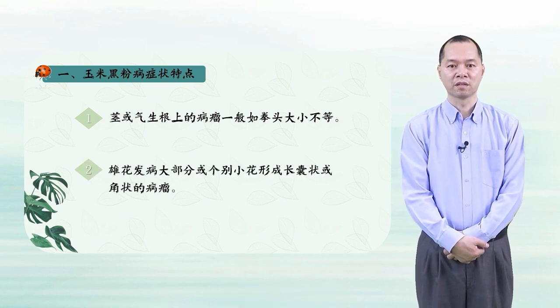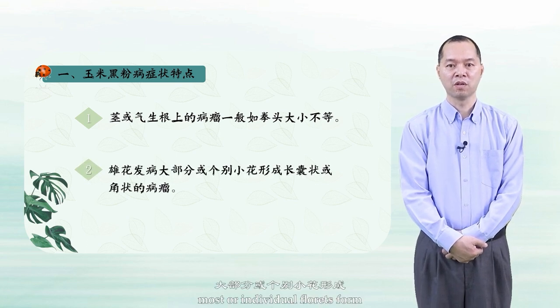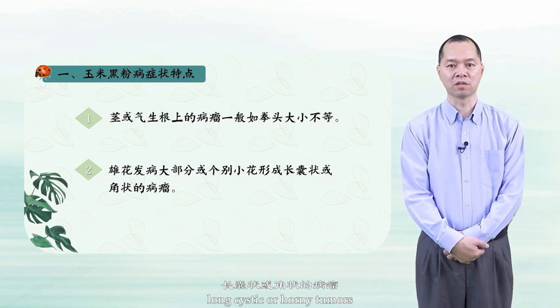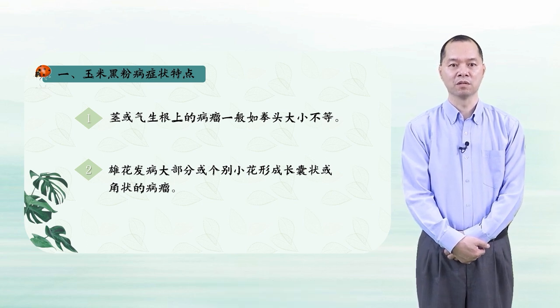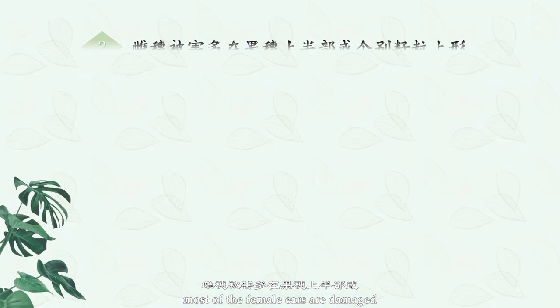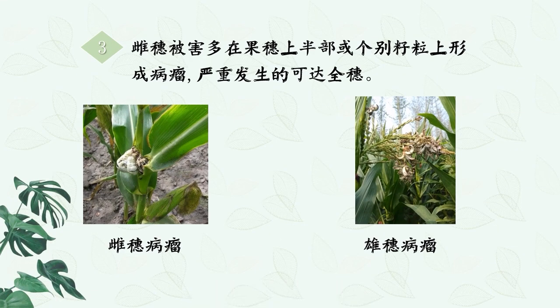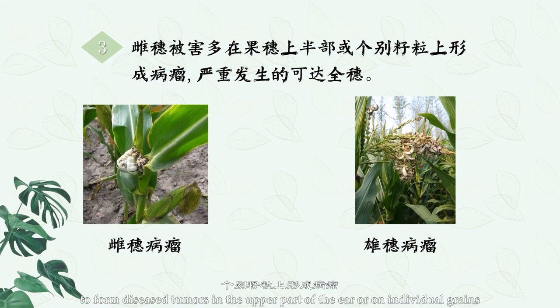On the male inflorescence, most or individual florets form long, cystic or horny tumors. Most of the female ears are damaged to form diseased tumors in the upper part of the ear or on individual grains, and the serious ones can affect the whole ear.